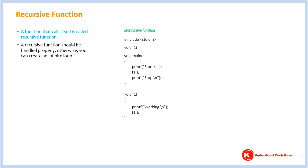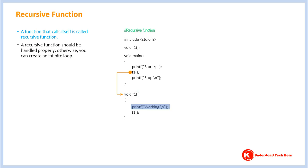As you probably know, when you run or execute a program, a computer looks for the main function and starts running or executing things inside it. When the computer encounters a call to function f1, the rule says: the computer goes from where the function is called to where the definition of the function is. So the computer goes to the definition and starts executing whatever is inside the function.